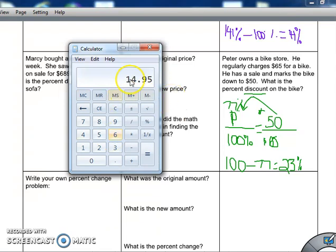So they took off $14.95. So if I do 65 minus 14.95, I get 50.05.